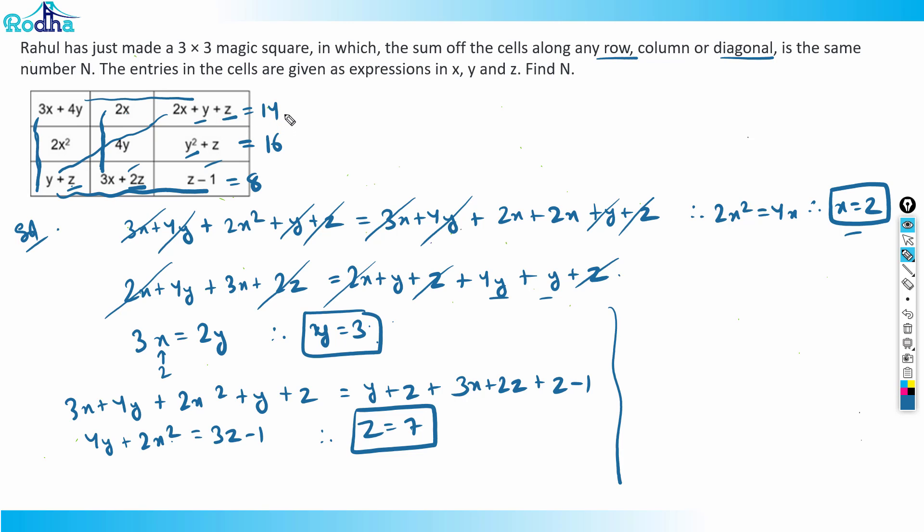4 plus 3, 7 plus 7, 14. 2 times 2 is 4 plus 3 is 7 plus 7, 14. Y² is 9 plus 7, 16. And this is, sorry, this will be 6. So 14 plus 16 plus 6. So the sum will be 36. That is the same along any column. That's the answer for this question.